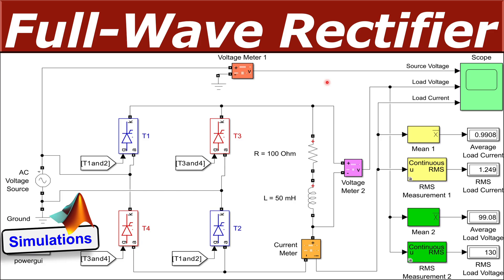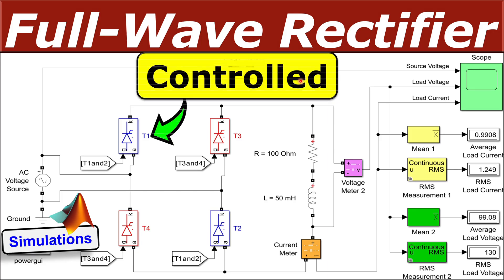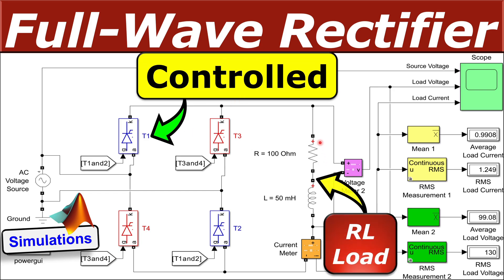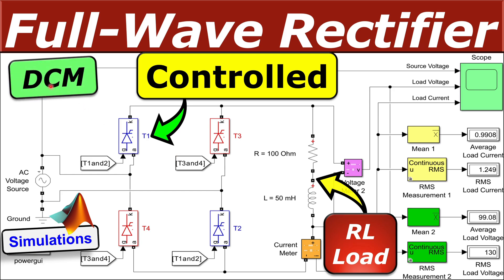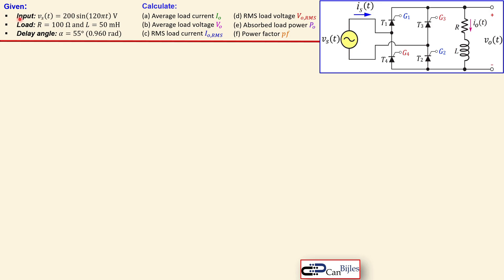Welcome to this video about the full wave rectifier. In this example, we will discuss the controlled full wave rectifier using thyristors with an RL load in series. The input source voltage is vs = 200·sin(120πt), the frequency is 60 Hz, and the amplitude is 200 volts. The load consists of a 100 ohm resistor and a 50 millihenry inductor.